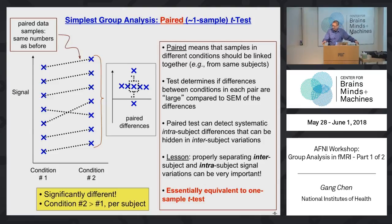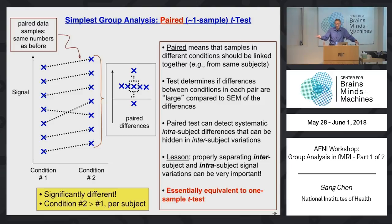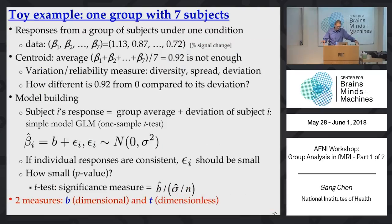Another scenario is the paired t-test. We have one group of subjects but two conditions — like house versus face. This scenario can be reduced to a one-sample t-test, because with seven subjects, we can reduce the two conditions by computing the difference between them for each subject. So essentially, a paired t-test is equivalent to a one-sample t-test. In the end, you get the mean of the condition difference and the standard deviation of that group mean.